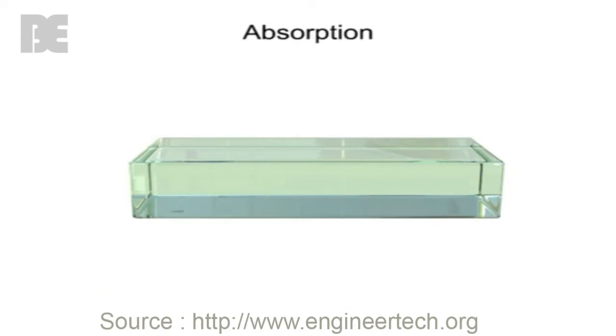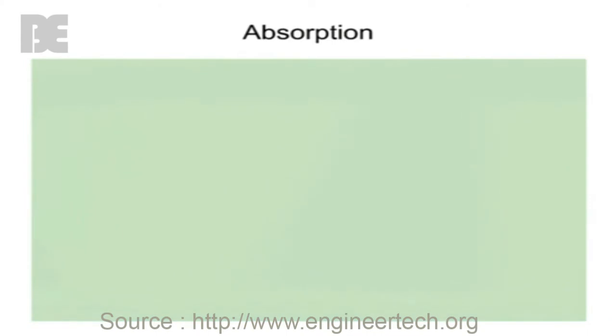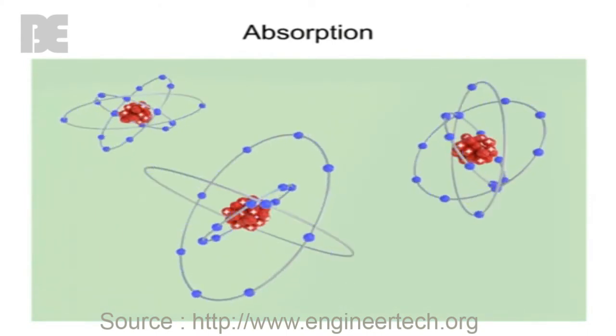This slowing down of light through transparent objects is a form of energy transport that involves the absorption and re-emission of the light wave energy by the atoms of the substance.